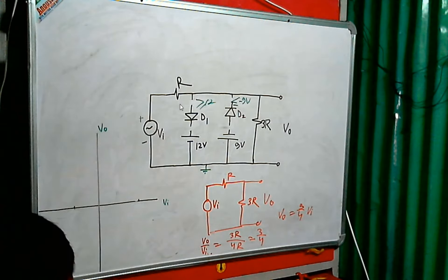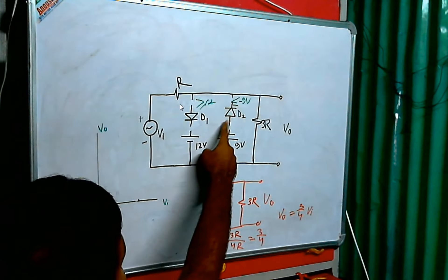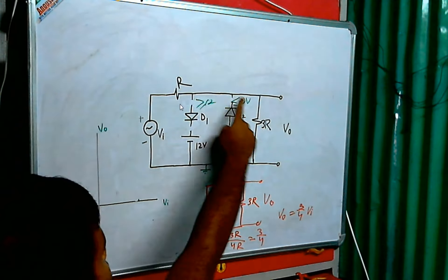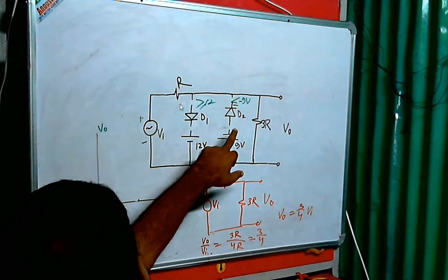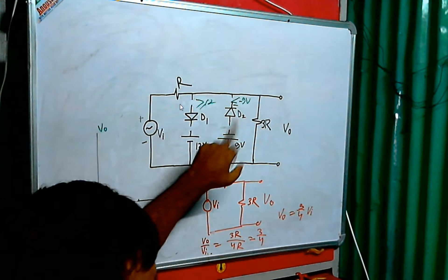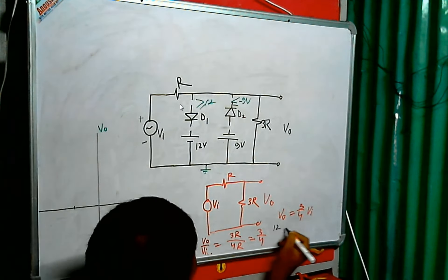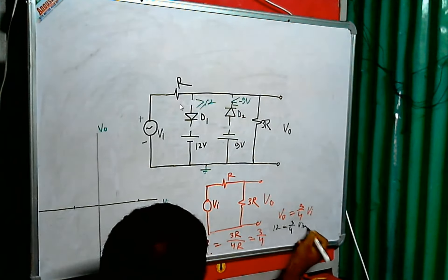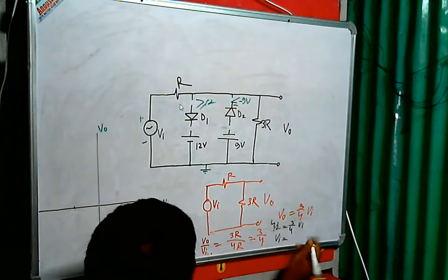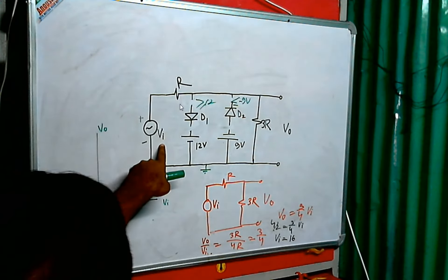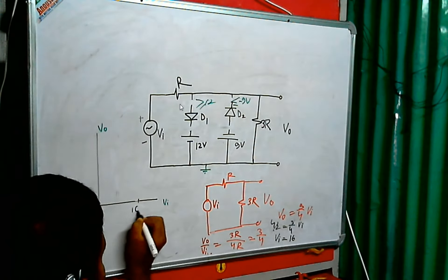The voltage at the diode nodes is essentially the output voltage. When the output voltage is greater than or equal to 12 volts, D1 turns on. When the output voltage equals 12 volts, we can write 12 equals 3 by 4 times Vin. Solving this, when the input voltage is 16 volts, D1 will turn on. So the first crucial voltage is 16 volts.